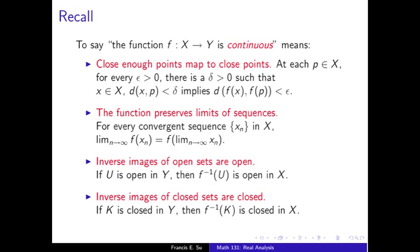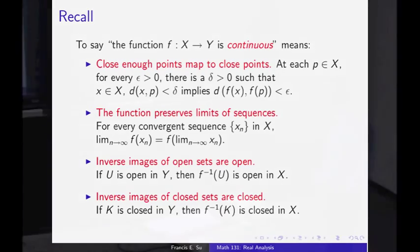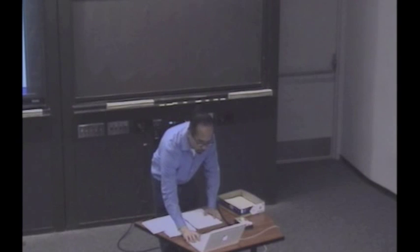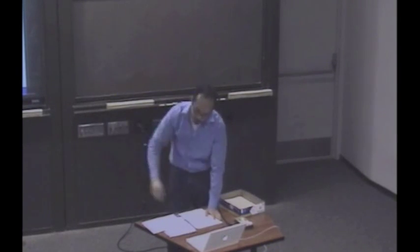The third definition is completely a topological definition, and it just says that the inverse images of open sets are open. And, of course, it's very closely related to the fact that inverse images of closed sets are closed. So this is what we discussed last time. We proved the third and fourth definition.